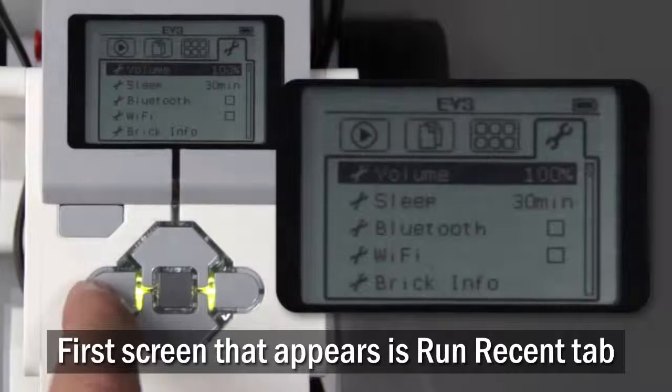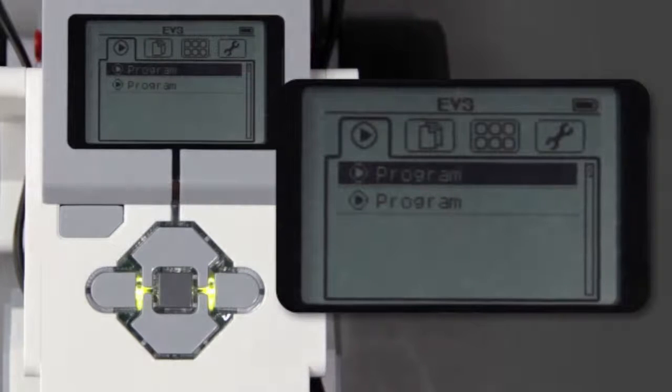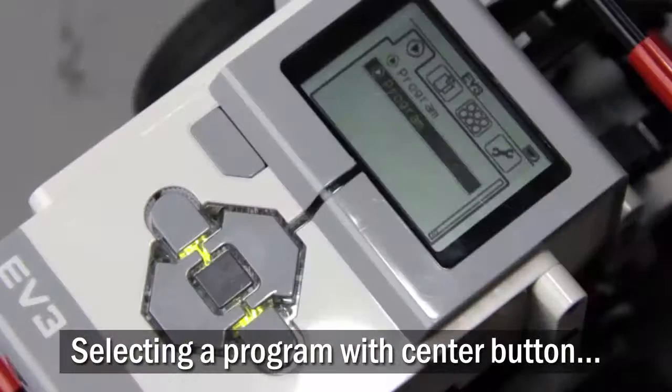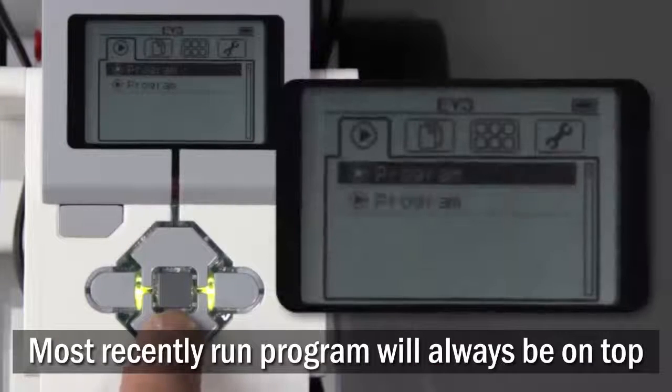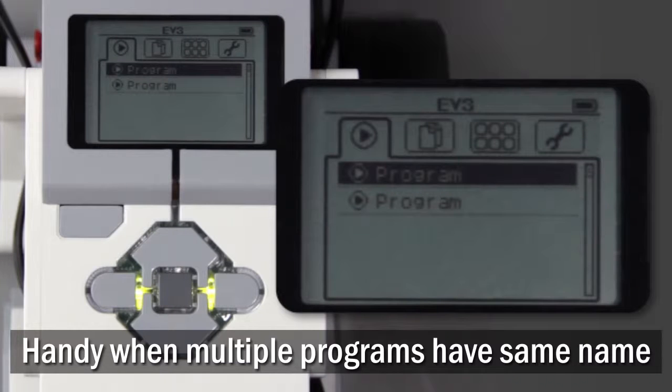The first screen that appears when you start up the EV3 is the Run Recent menu. It shows all the programs that have been run recently on the EV3. Selecting a program and hitting the center button will run the program again immediately. The most recently run program will always be at the top. This is handy if you have multiple programs with the same name.